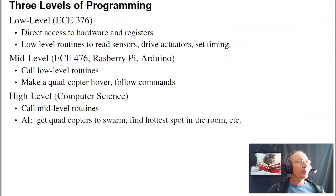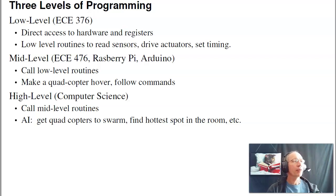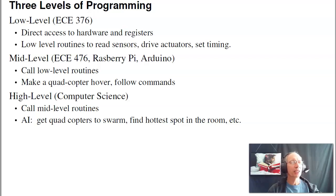In programming, there are really three types. There's low-level programming — that's what we do in this class. That's where we want direct access to the hardware and registers: read the input pins, drive the output pins, set up timers, read analog inputs. Those are low-level routines. That's what ECE 376 is about. That's why we're using a PIC, C compilers, and assembly — we have direct control and direct access to everything.